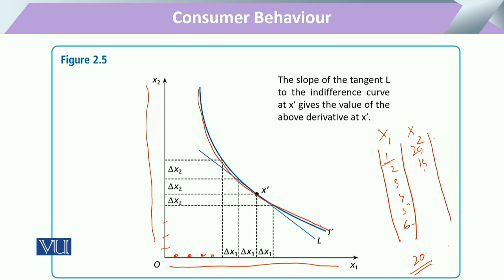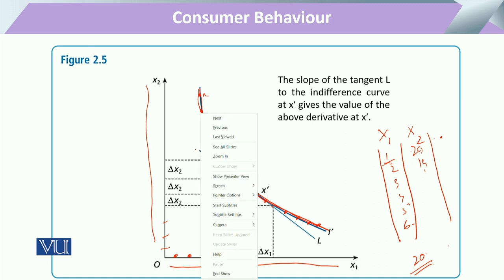These are basically the combination points which we draw. We first place all the combination points on our graph, and then the curve is basically that line joining all these combinations of our preferences or selection models — the various combinations the consumer has selected. These consumption bundles can be labeled A, B, C, D, and so on.